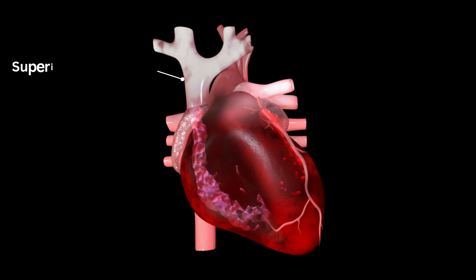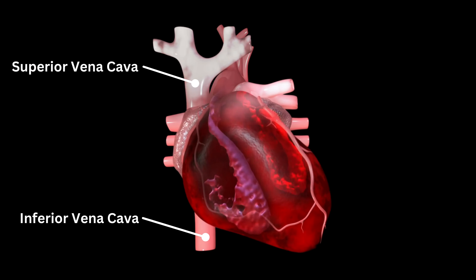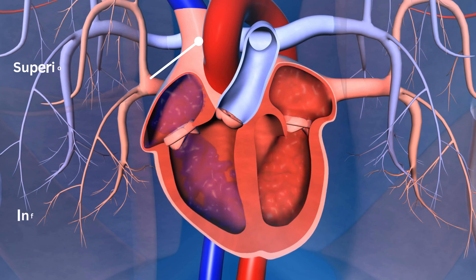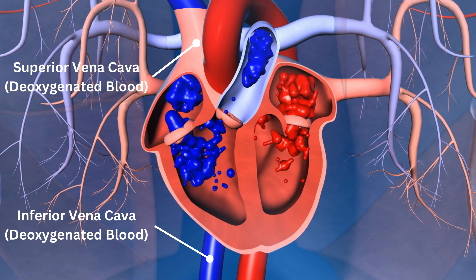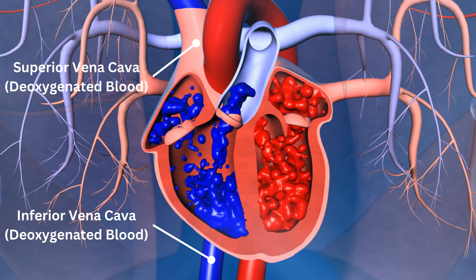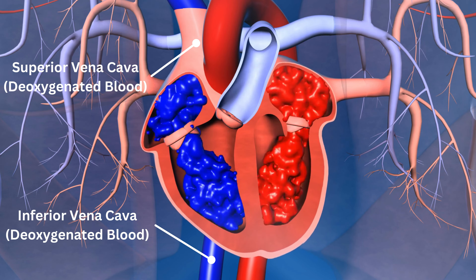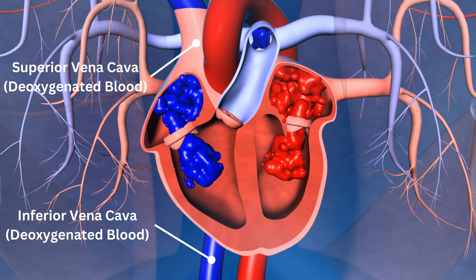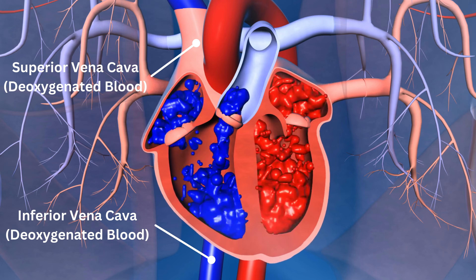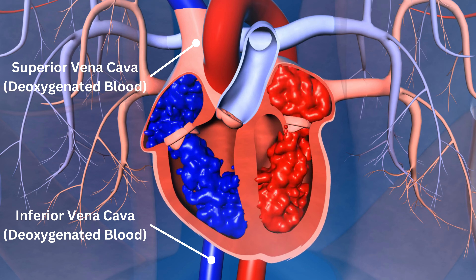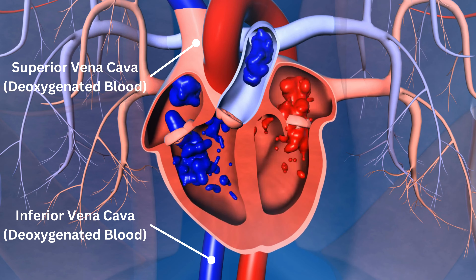The superior vena cava carries deoxygenated blood from the upper body to the right atrium. The inferior vena cava carries deoxygenated blood from the lower body to the right atrium.